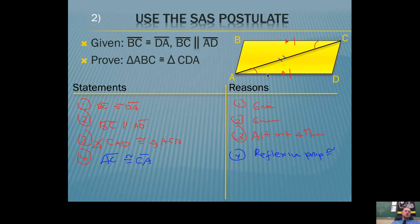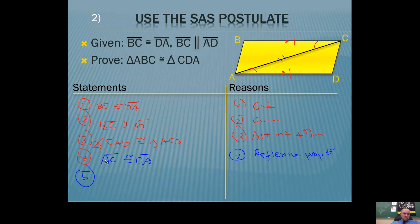Now look at your picture: you have two pairs of congruent sides and congruent angles that are included. That means your triangles are congruent, and you can write it exactly the way they want you to prove it — triangle ABC is congruent to triangle CDA by Side Angle Side.